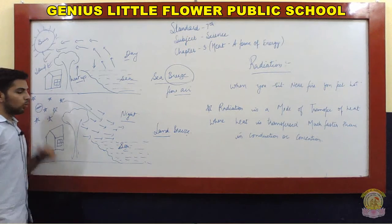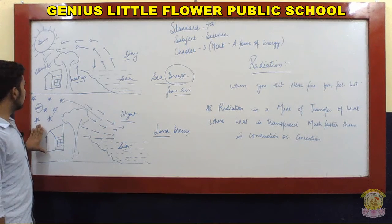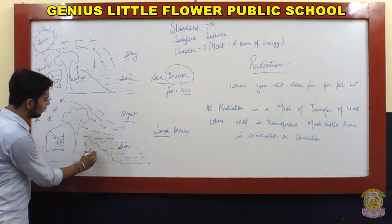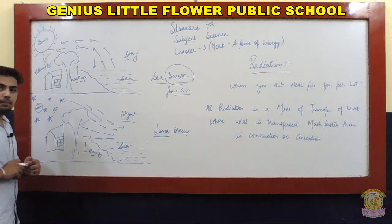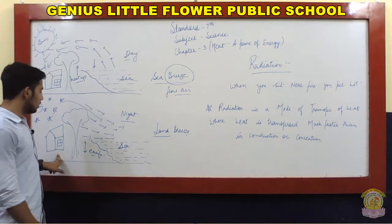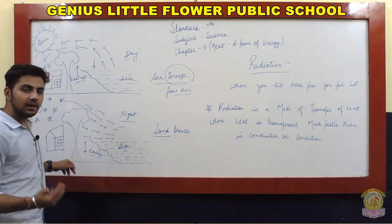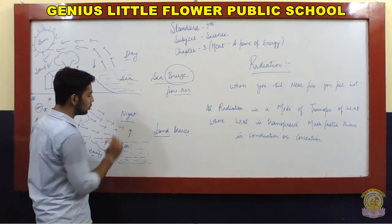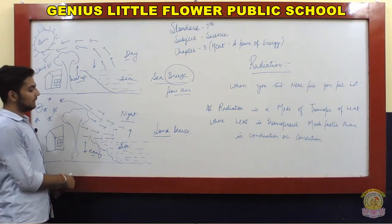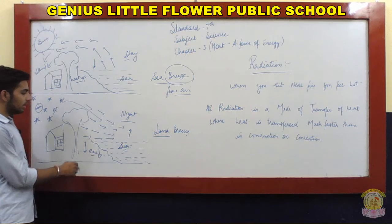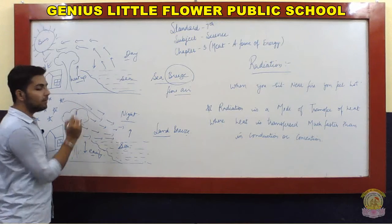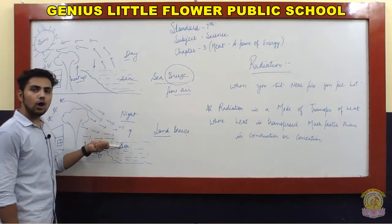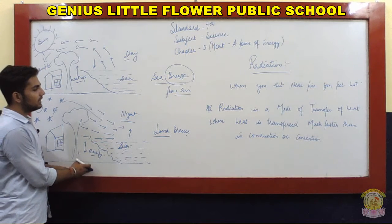At night, after sunset, the land cools down very quickly while the sea retains its heat and cools slowly. So now the temperature of the sea is higher than the land. The hot air over the sea rises up, and the cold air from the land flows toward the sea. This is called land breeze, which occurs at night.